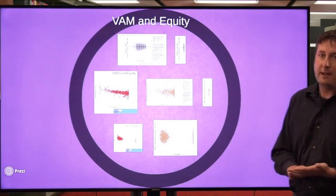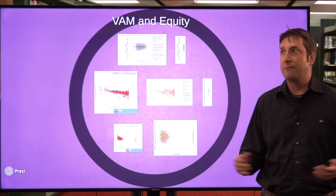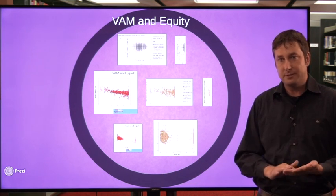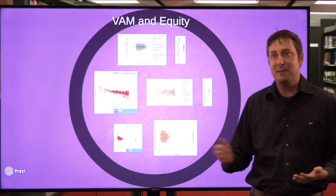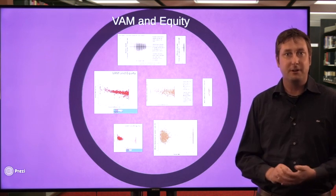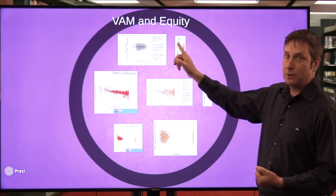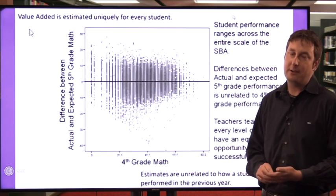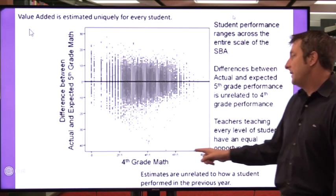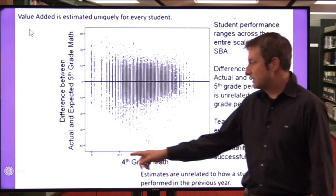For those non-math people, I apologize in advance because we're about to dig into some scatter plots. On the bottom axis we have fourth grade math standardized test scores — students scored from zero up to about 80. There were fewer students scoring at 80, fewer at zero, and lots in between, but scores all throughout the continuum. On the other axis we have the value-added score, which is the difference between the actual and expected fifth grade score.